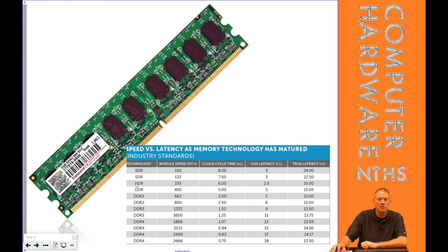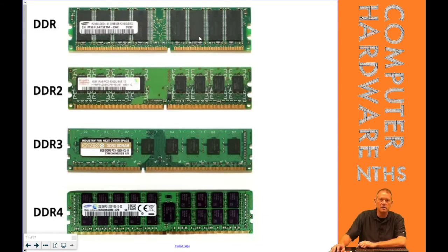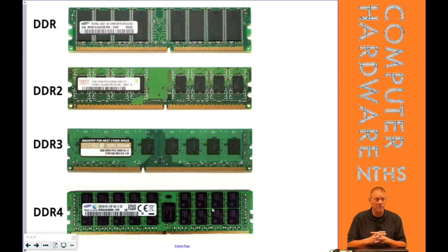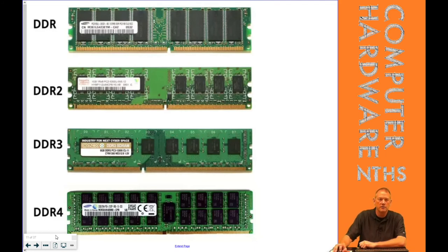The generation referred to is that number on the end. So when you're asked what generation that memory is — if it's DDR4, it's fourth generation memory. You can see the gold connections increased as we went from DDR up to DDR4, and the notch changed and moved, but the size of the RAM really stayed the same. The act of putting them in and taking them out is the same between DDR, DDR2, DDR3, and DDR4. You just need to make sure it matches the motherboard you're working with.